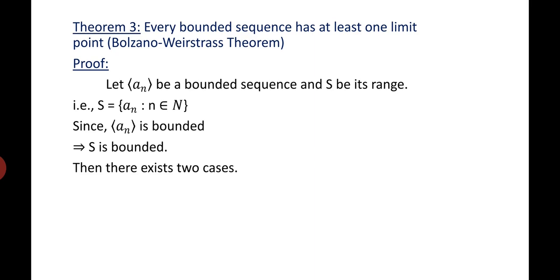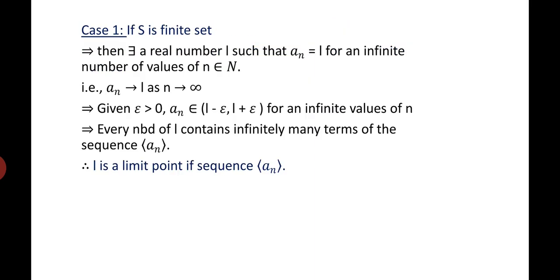Let A_N be a bounded sequence and S be its range, that is S = {A_N : N ∈ ℕ}. Since A_N is bounded, S is also bounded. We have two cases: Case 1, if S is a finite set, and Case 2, if S is an infinite set. In Case 1, if S is finite, there exists a real number L such that A_N = L for an infinite number of values of N, meaning A_N tends to L as N tends to infinity.